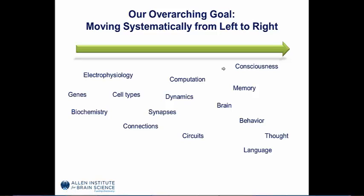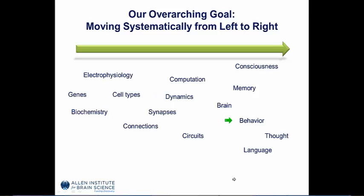At the Allen Institute, we absolutely want to understand phenomena such as consciousness, behavior, and thought — really, how does the brain work? Ten years ago, we started out with the very basics at the gene level, trying to understand the fundamentals. We are systematically working our way across this space. Our plan for the next decade is to concentrate on understanding the components of the brain, starting with cell types, understanding computation, how the brain processes information and talks to itself. We want to understand the different circuits. We're also focusing on cognition, which requires understanding the dynamics of the brain, and we are starting to look at cognition in behaving mice.